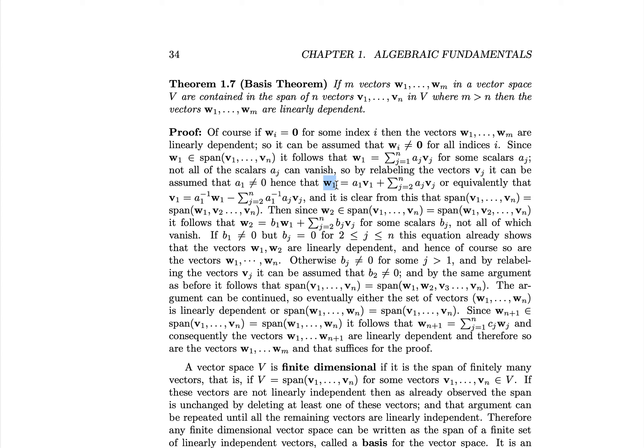Then, since w2 is in the span of v1 to vn, and we've shown that equals the span of w1 up to vn, we can write w2 as a linear combination of w1 up to vn. So w2 equals b_1 * w1 plus another sum for some scalars b_j, not all of which vanish. If all the b_j's on the v terms are zero, then w1 and w2 are linearly dependent, and consequently all m vectors are linearly dependent — if any two are linearly dependent, the larger set is still linearly dependent.